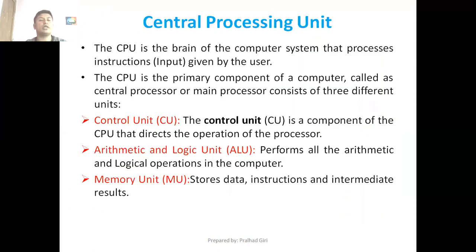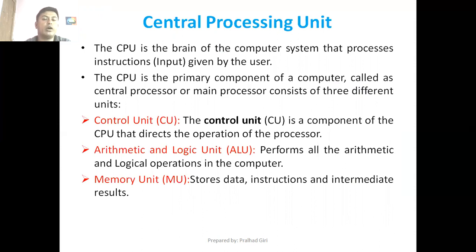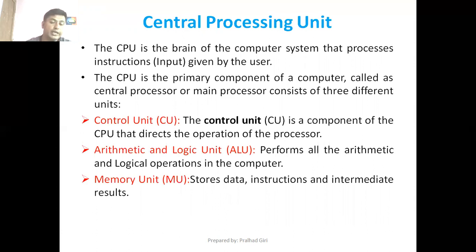This is all about input devices. Now let us move to the next type of computer hardware, which is the Central Processing Unit or CPU. The CPU is the brain of a computer system that processes instructions given by the user. It is the primary component of a computer, also called the central processor or main processor. It basically consists of three units: the control unit, which directs the operation of the processor; the arithmetic and logical unit, which performs all arithmetic and logical operations; and the memory unit, which stores data, instructions, and results.